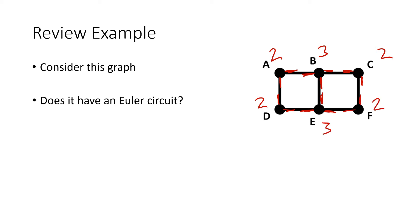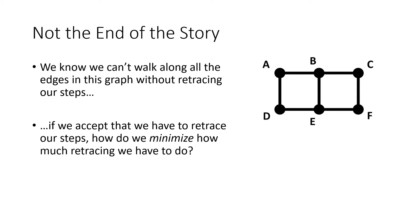And what we're looking at here is that because we got two odd numbers, and really only one odd number would be enough, but because we got any odd numbers at all, that means this graph does not have an Euler circuit. So we know that we cannot find a way to walk along all the edges in this graph and return to our starting point without retracing our steps.